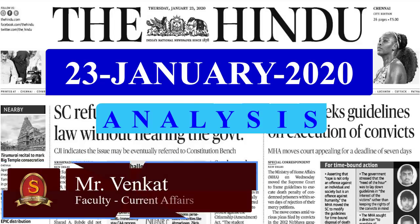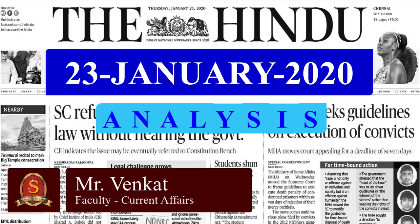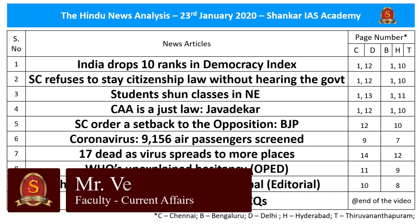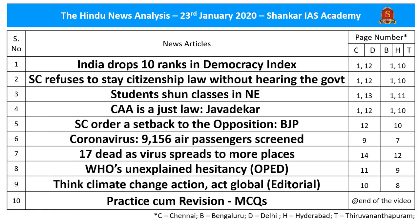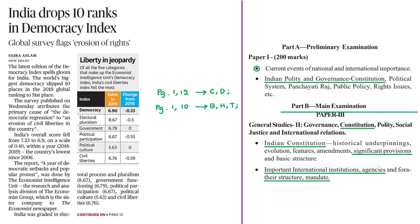Welcome to the Hindu news analysis by Shankar IAS Academy. The news articles along with the page numbers are displayed here for your reference. The PDF link of the handwritten notes and the timestamping of the news articles is given in the description box as well as in the comment section. Today's news analysis covers the Democracy Index of 2019, including the global scenario and India-specific data. The syllabus relevant for this analysis is highlighted here for your reference.